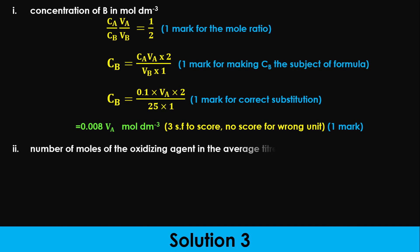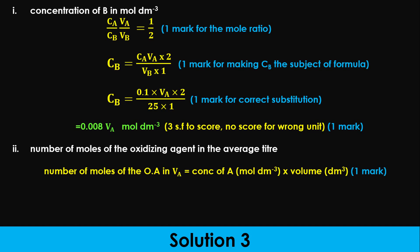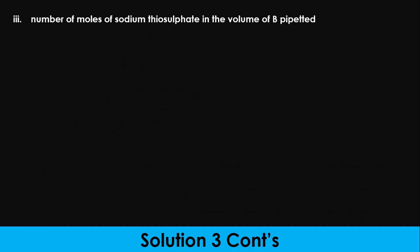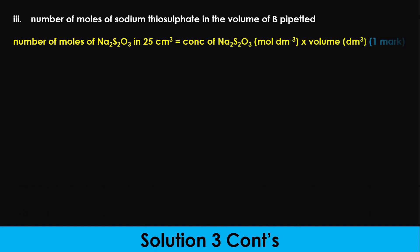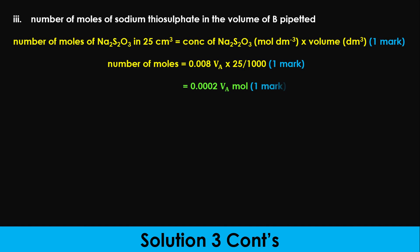To calculate the number of moles of the oxidizing agent in the average titer, use the formula: moles equals concentration in moles per dm³ times volume in dm³. Number of moles of oxidizing agent in Vₐ equals 0.1 times Vₐ over 1000, giving 0.0001 Vₐ mole. Similarly, to calculate the number of moles of sodium thiosulfate in the volume of B pipetted, use the same formula with 0.025 dm³ as the volume, giving 0.0002 Vₐ mole.